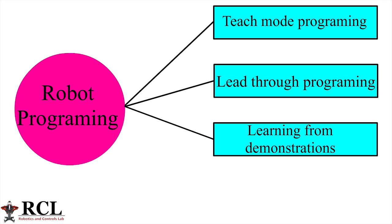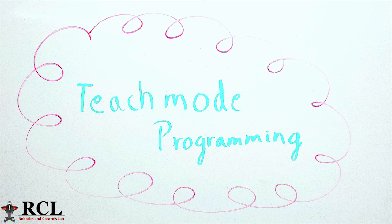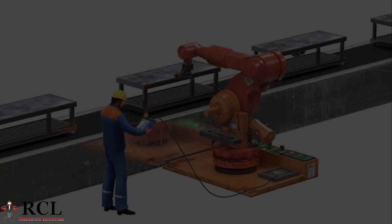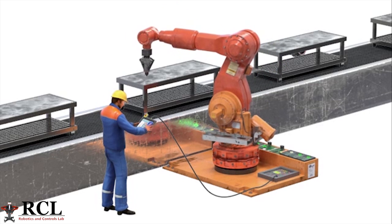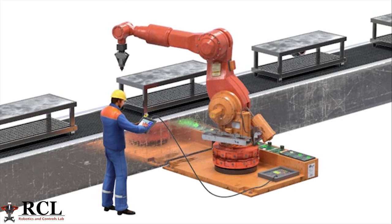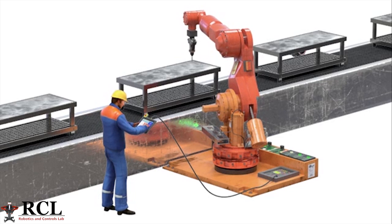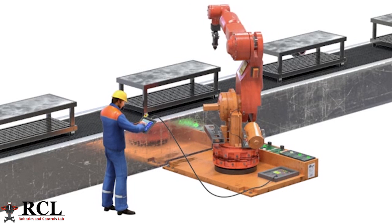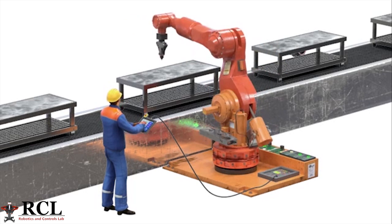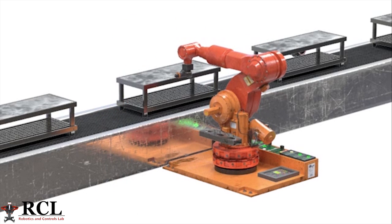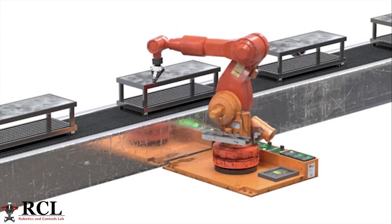In teach mode programming, a person can use the switches on a teaching pendant to guide the robot through a sequence of events. The positions are stored for the robot to repeat the actions with the help of a controller. This method is very useful in teaching simple movements. However, this may not be preferred where robots are frequently reprogrammed.